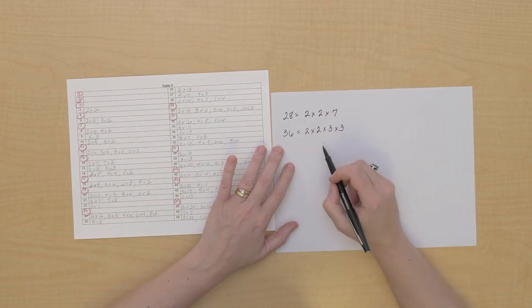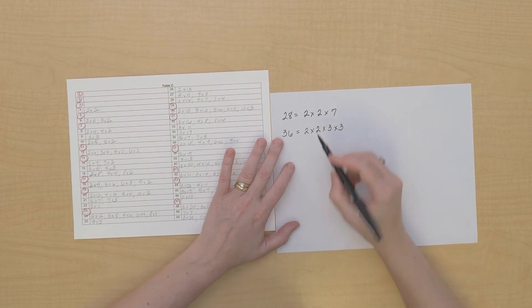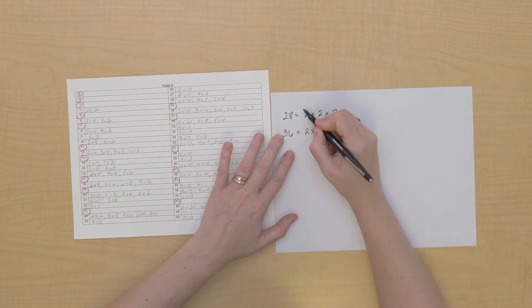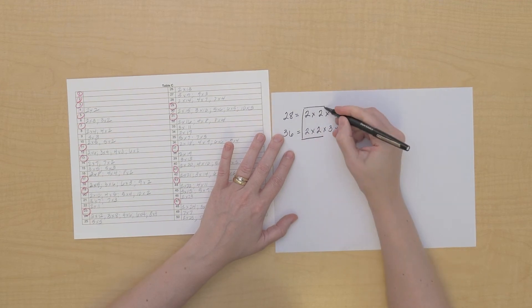Now we found the prime factors of 28 and the prime factors of 36. Let's just see what they have in common. I can see that they both have 2 times 2.